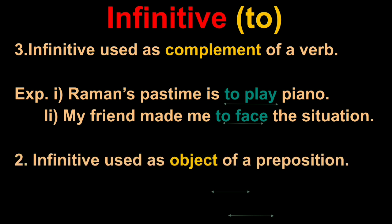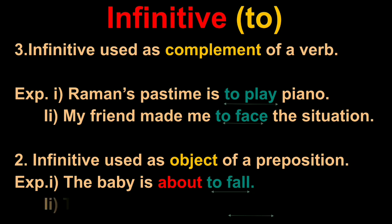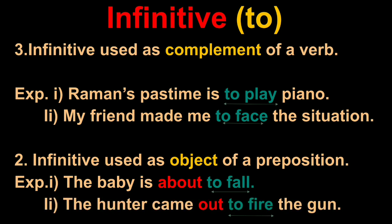Fourth one is infinitive used as object of a preposition. Preposition can also have an object. Example: 'The baby is about to fall' and 'The hunter came out to fire the gun.' Here, 'to fall' is infinitive and 'about' is preposition. 'To fire' is infinitive and 'out' is preposition. So here, it also becomes object of the preposition. There are four functions of infinitive: as subject, as object, as complement, and as object of preposition.